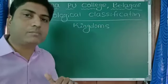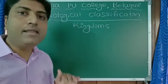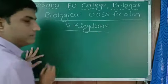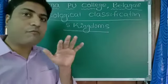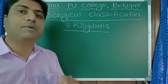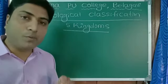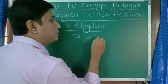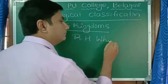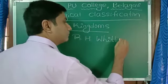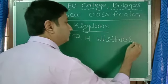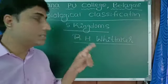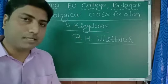How many kingdoms? Totally five kingdoms. And this five kingdoms system of classification was proposed by R.H. Wittaker.